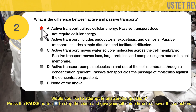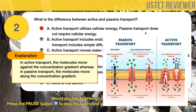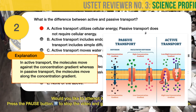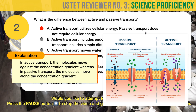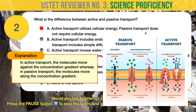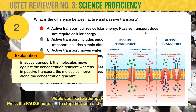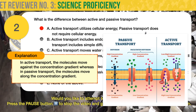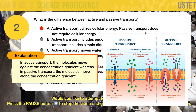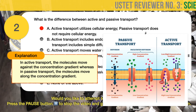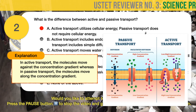The correct answer is A. Remember that active transport is the process of moving molecules across a cellular membrane through the use of cellular energy. Passive transport, on the other hand, can only move molecules from a region of higher concentration to a region of lower concentration. In active transport, the molecules move against the concentration gradient, whereas in passive transport, the molecules move along the concentration gradient. Hence, the correct answer is letter A.